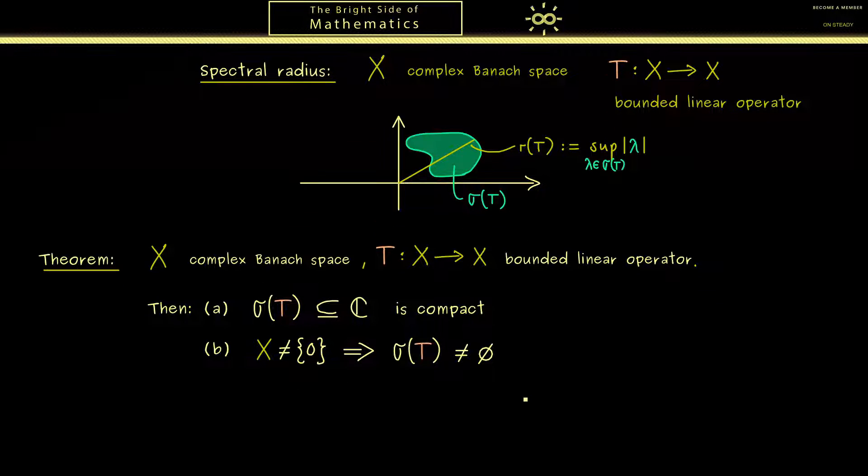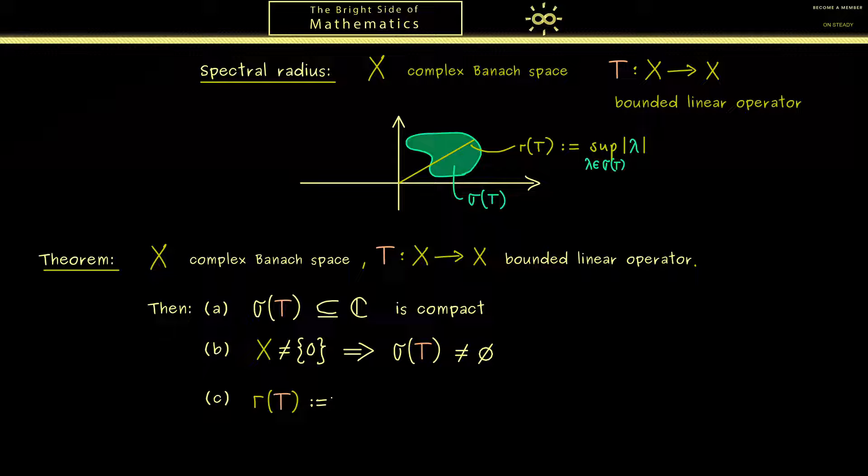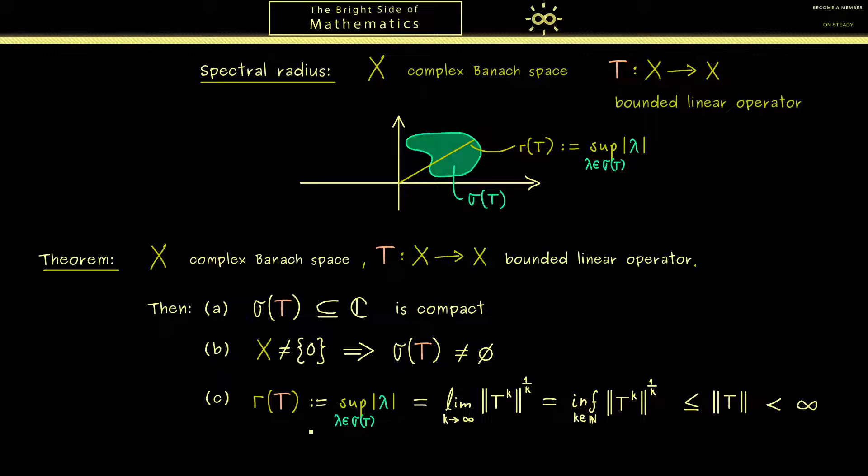Okay, then the last part c is about the spectral radius. As I already told you, the spectral radius r of T is given by the supremum where we go through all the points lambda in the spectrum and we look at the absolute value. Now one important result here is that instead of calculating a supremum we can look at a limit, and there we take the operator norm of the powers of T, then outside of the norm we take the kth root again. One additional result is that this sequence is monotonically decreasing, so the limit is equal to the infimum. However most importantly we get the result that the whole spectral radius is bounded by the operator norm of T. Therefore please always remember the spectral radius can never be bigger than the operator norm.